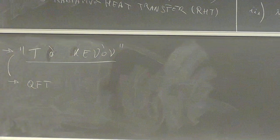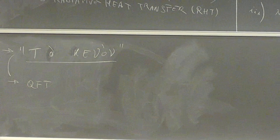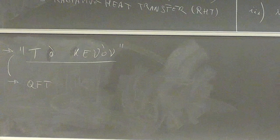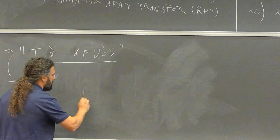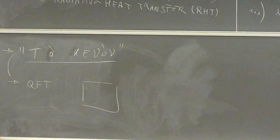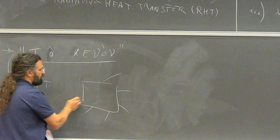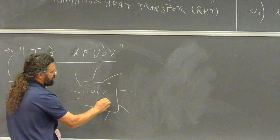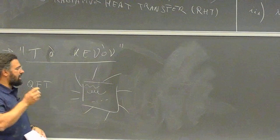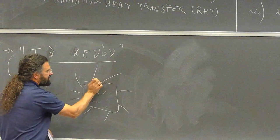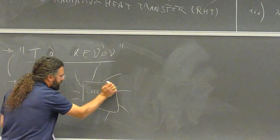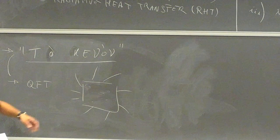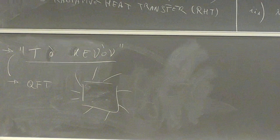Most of you know what is vacuum in quantum field theory; I will just repeat something you already know. If you take a box and eliminate photons, gluons, electrons — whatever you want — what remains inside? That is the question. What remains inside is what we call the quantum vacuum.